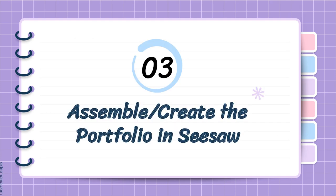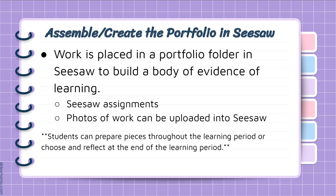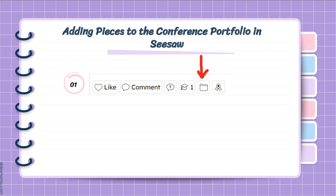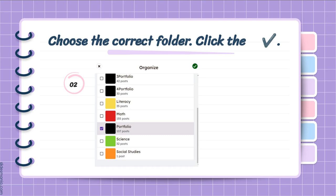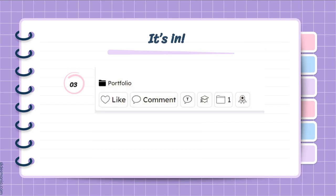The next step is assembling and creating the portfolio in Seesaw. Work is placed in that portfolio folder to build that body of evidence — it can be assignments already in Seesaw, or photos of work uploaded into Seesaw. That's what I love about Seesaw; it can really be used in so many ways for students to show their learning. There's a simple tutorial: on any assignment they create in Seesaw there's a little folder icon. They click on the folder, and I already have the portfolio set up to go. At the bottom of the assignment it will show which folder it's in, and portfolio shows up so they and I can see it and make sure it's where it belongs.